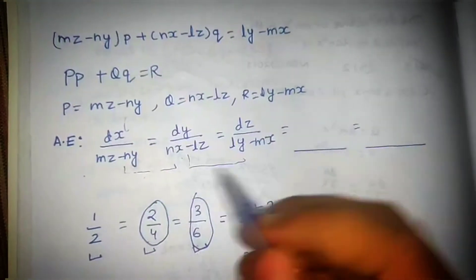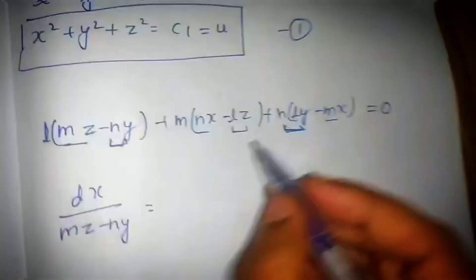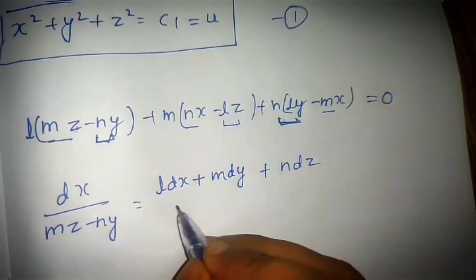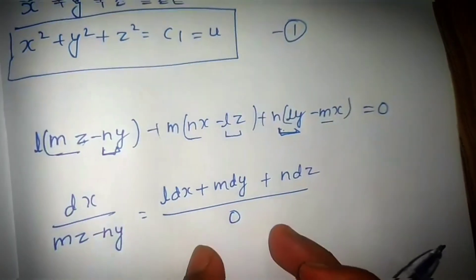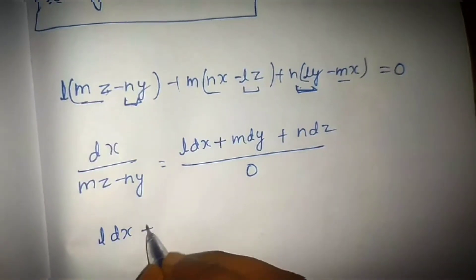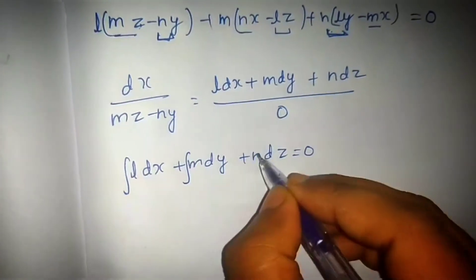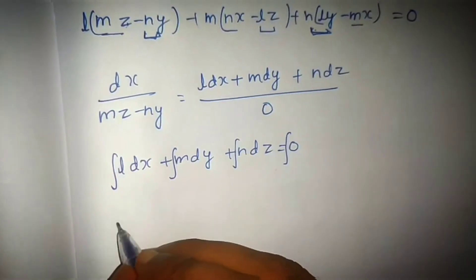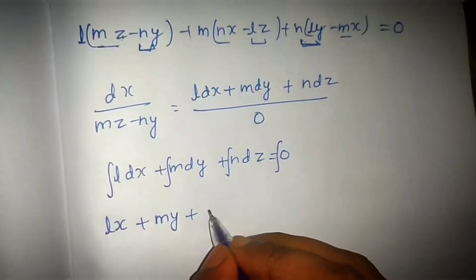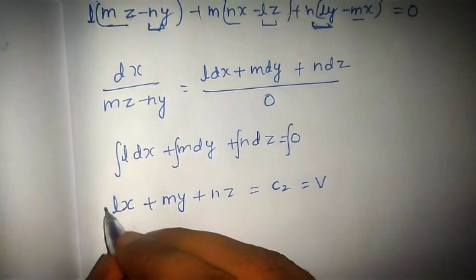With multipliers L, M, N, the new fraction is (L·dx + M·dy + N·dz) divided by zero. Equating with any original fraction and cross-multiplying gives: L dx plus M dy plus N dz equals zero. Integrating, since L, M, N are constants: Lx plus My plus Nz equals C2, which we can also call V. This is our second equation.